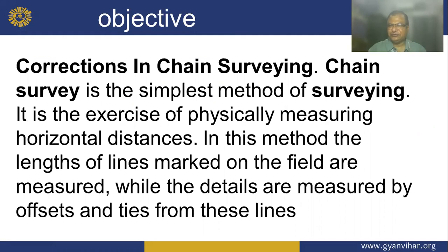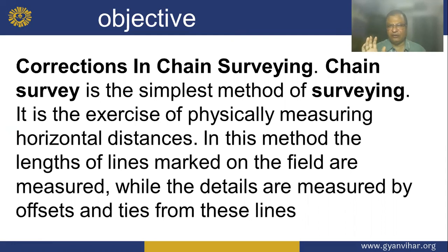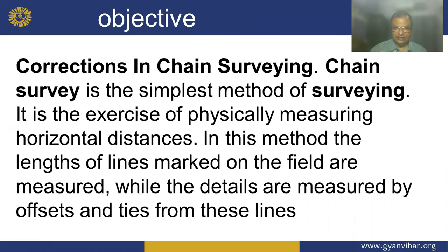First, what is the objective of this? Correction in chain surveying: chain surveying is the simplest method of surveying. It is the exercise of physically measuring horizontal distances in this method. The length of lines marked on the field are measured, while the details are measured by the offset and tie from these lines.